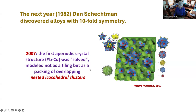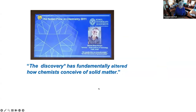It took 25 years for the first aperiodic crystal structure to be solved. When it was, it wasn't a tiling or a parallelohedra — but a packing of overlapping nested icosahedral clusters. This is from Nature Materials 2007. Then, Dan Shechtman won the Nobel Prize in chemistry in 2011. The prize foundation stated: the discovery has fundamentally altered how chemists conceive of solid matter.